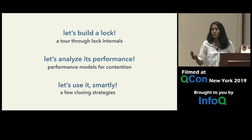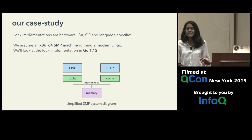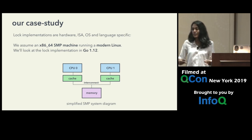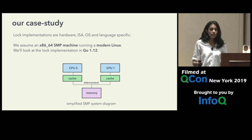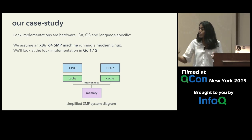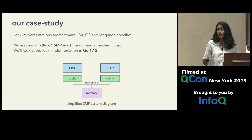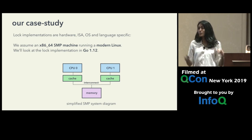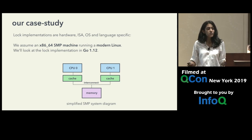An important note: everything about locks — the lock implementation and performance — is specific to the hardware, the instruction set, the operating system, and the specific language implementation. Today we'll assume a standard SMP system, so we have multiple cores that share a memory bus. We'll assume x86-64 running modern Linux, and we'll look at the lock implementation in Go.